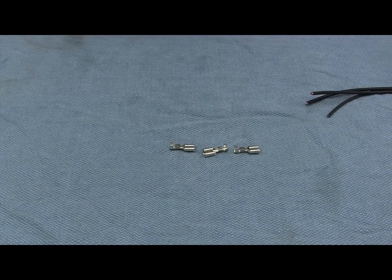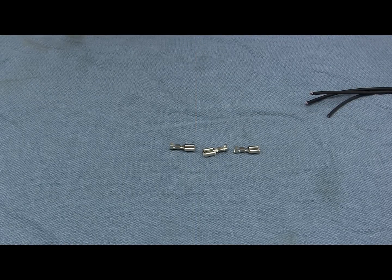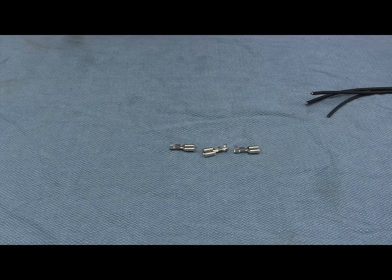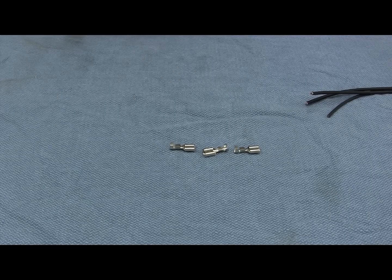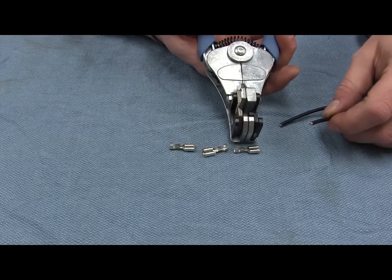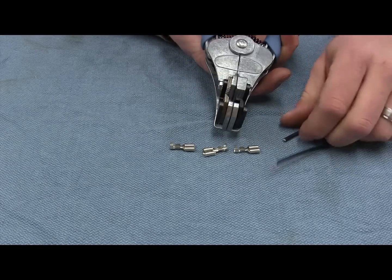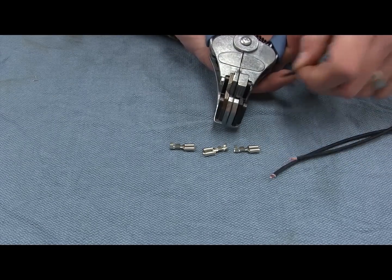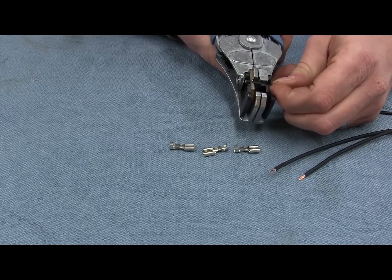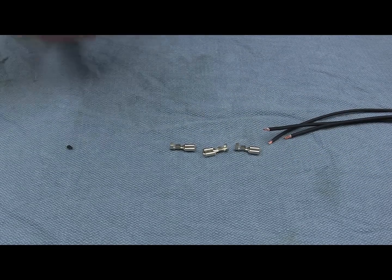Now that you've got your leads through the grommet and you've got the sheathing installed, you've measured and cut your wires to the proper length. It's time to strip the insulation back so we can install the terminals. So this is where a good set of wire strippers comes in. It makes the job a lot easier. You're going to go ahead and strip all your leads back. Make sure they're at the proper length. And then we can go ahead and install the terminals.